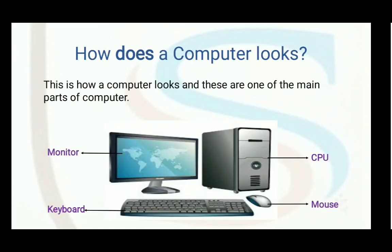How does a computer look? You might have seen one at home or in the school lab. These are the basic parts of a computer. You can see a monitor, which is just like a TV screen. There is a keyboard, which has many keys that help us in typing. Then we have a mouse — not the animal, but a device that helps us in clicking and pointing. And there is the CPU, which is said to be the brain of the computer, where all calculations and programming are done.